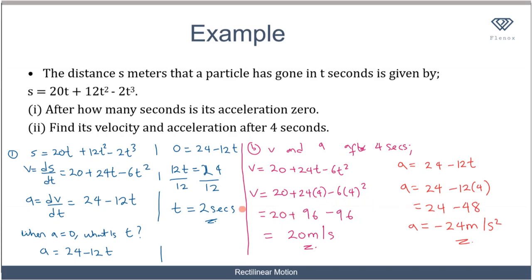To recap: to find when acceleration is zero, we found the acceleration function and set a = 0 to get t = 2 seconds. To find velocity and acceleration after 4 seconds, we substituted t = 4 into each function, giving v = 20 m/s and a = -24 m/s², indicating deceleration. That's how we apply differentiation to solve problems involving motion.